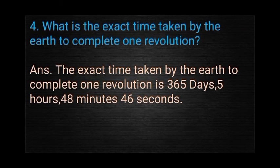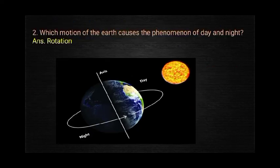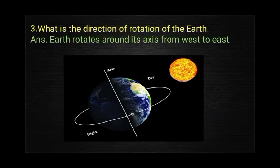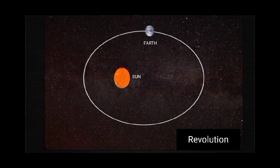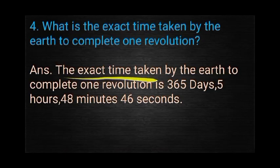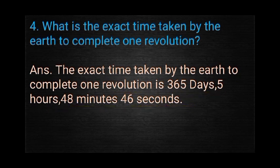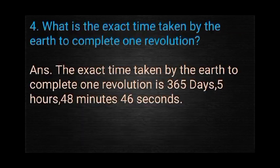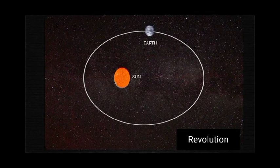Question 4: What is the exact time taken by the Earth to complete one revolution? Revolution means the annual movement of the Earth around the sun. The exact time is 365 days, 5 hours, 48 minutes, and 46 seconds. Approximately we can say 365 days, but if the exact time is asked, it is 365 days, 5 hours, 48 minutes, and 46 seconds.